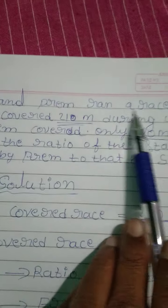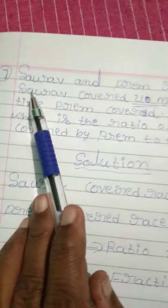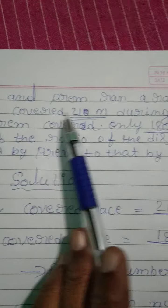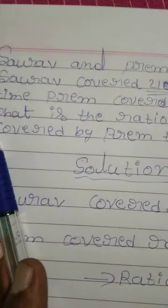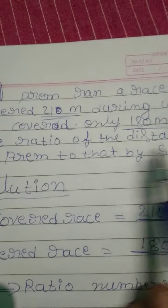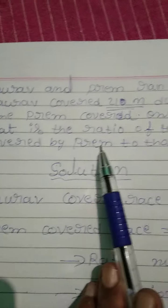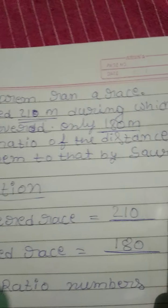Q7. Sourav and Prem ran a race. Sourav covered 210m, during which time Prem covered only 180m. What is the ratio of distance covered by Prem to that by Sourav?